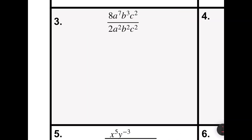Problem number three says 8a to the 7th b to the 3rd c squared divided by 2a squared b squared c squared. Since this is division, we are going to use the quotient property. The quotient property says to divide exponents with the same base, you subtract the exponents. First we'll look at the 8 and the 2: 8 divided by 2 has always been and will forever be 4. Now we'll look at the base a: a to the 7th divided by a squared — keep the base a and subtract 7 minus 2 and get 5.